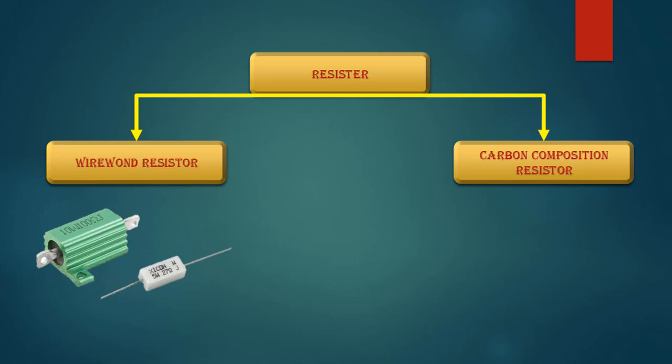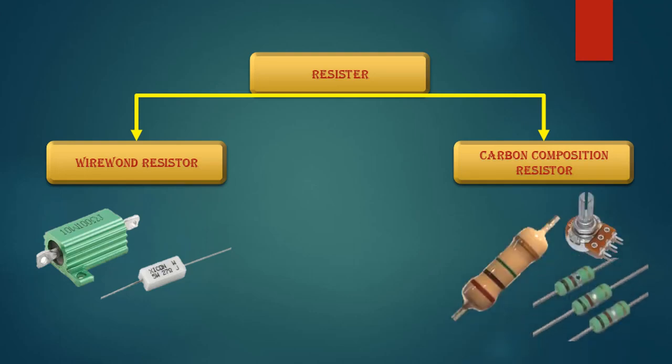The carbon composition resistors are those resistors which are very small in size. They cannot control high voltage; they are used for small currents and small voltage, meaning they can control only very small wattage.